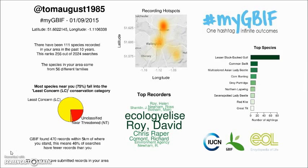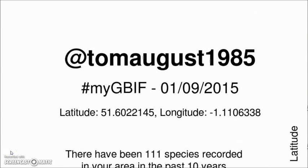Here's the image returned along with the tweet. There's quite a lot of information here so I'll go through it step by step. First, we have information about the user who sent it — my username, hashtag mygbif, the date, and the location. This means if you want to save or share the image, you'll always be able to see who did it, when they did it, and where they were.